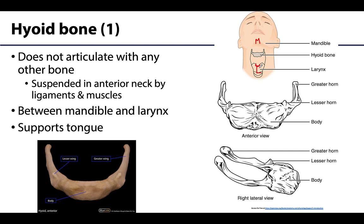The hyoid plays a role in terms of support of the tongue. This bone, as well as the cartilages of the larynx and the trachea, are often — but not always — fractured or damaged during strangulation. So during autopsy when manual strangulation is suspected as the cause of death, you want to check to see if the hyoid has been fractured.